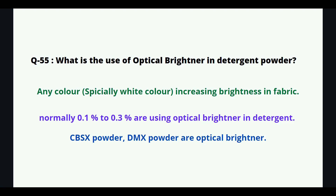What is the use of optical brightener in detergent powder? It increases the brightness of any color, especially white color, in fabric. Normally, 0.1% to 0.3% optical brightener is used in detergent. CBSX powder and DMX powder are optical brighteners.